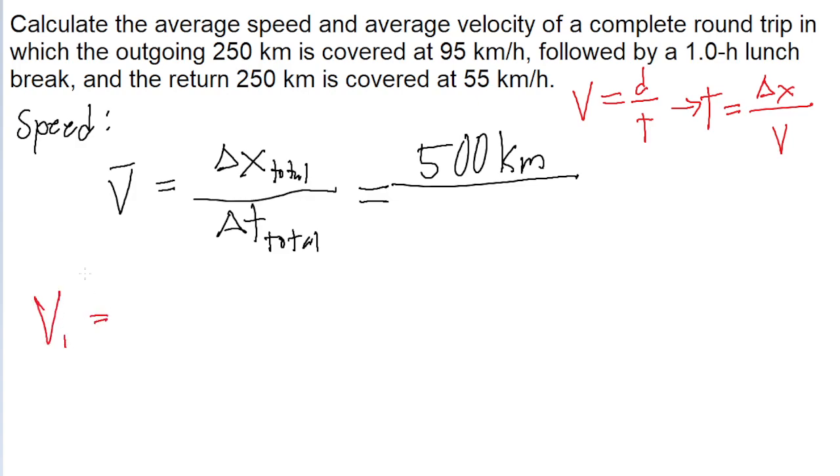So for the outgoing trip, which I'll call v sub 1, that is going to be equal to the distance traveled during the outgoing trip, divided by the time it took for the outgoing trip. So it's the distance traveled during the outgoing trip, divided by the speed, v sub 1.